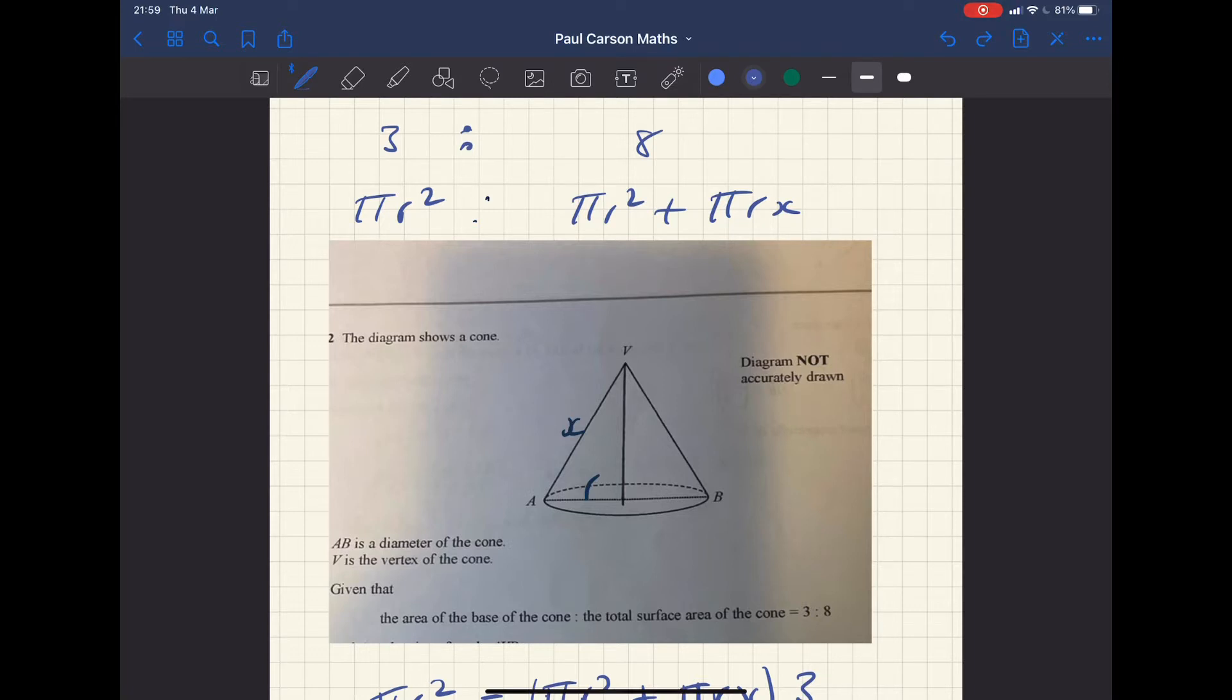So I've written at the top there, it's a ratio of three to eight. So the two areas will be πr², the bottom of the cone, and πr² + πrx. So I've defined x as being the length av. You called it av. It's usually easier just to call it one letter. It makes the algebra less fiddly. And you also defined the radius as being ab over two. So I just changed that to r.